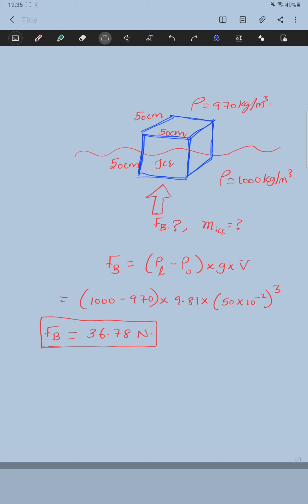And what is the next thing we have to find? The mass of ice. That is even simpler. How? We know that density is mass by volume, so mass equals density times volume.